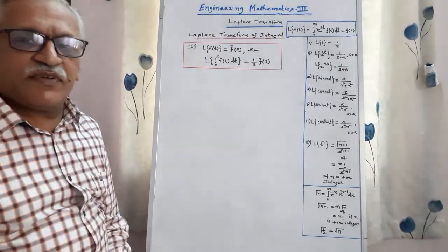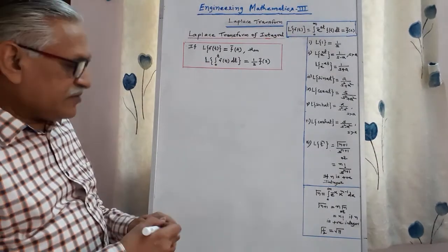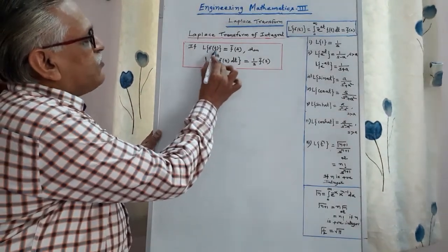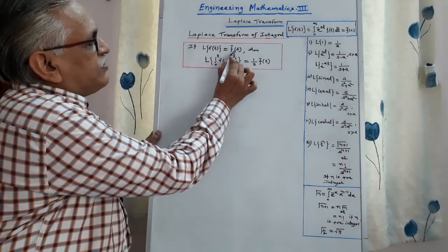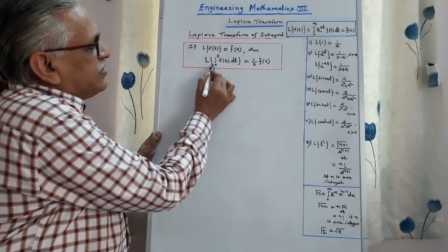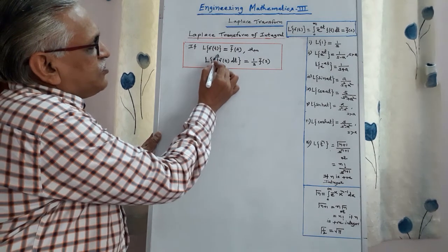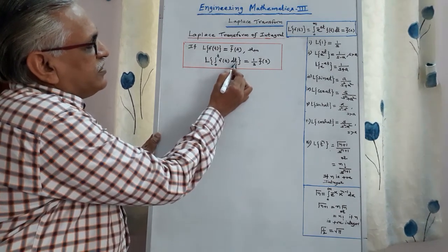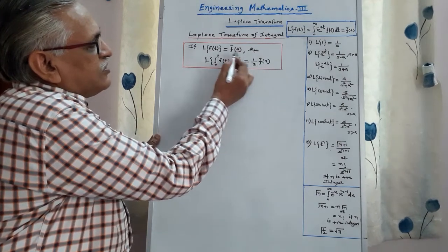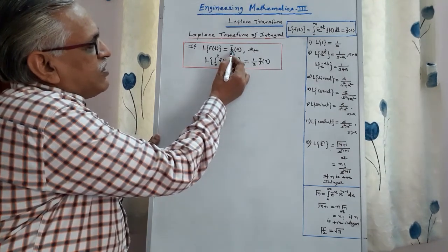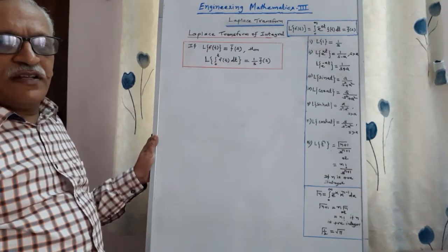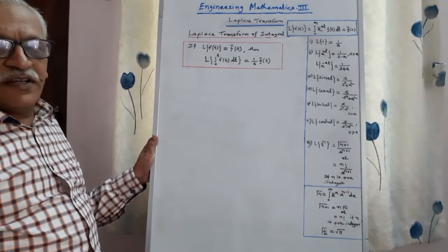Let us see the statement of that theorem. If Laplace of f(t) is equals to F̄(s), then the Laplace Transform of the integral from 0 to t of f(t) dt is equals to 1/s into F̄(s). Whatever F̄(s) is, we have to multiply it by 1/s to obtain the Laplace Transform of the integral.